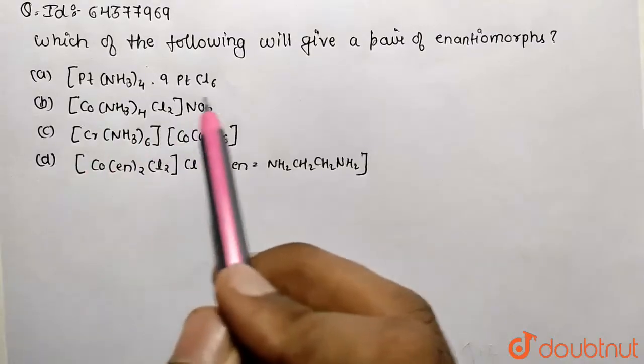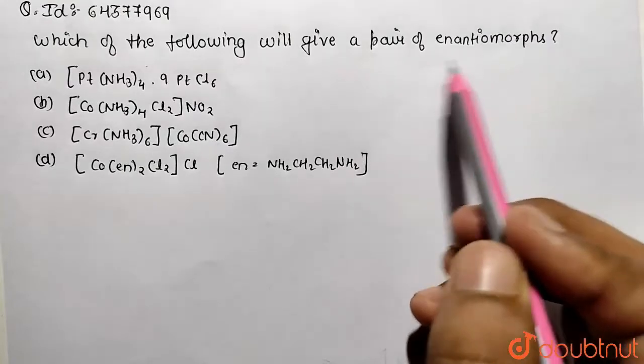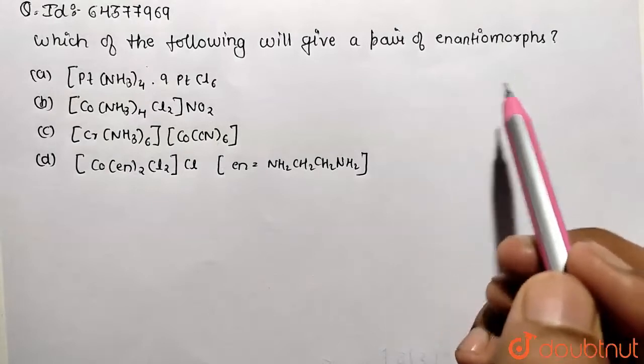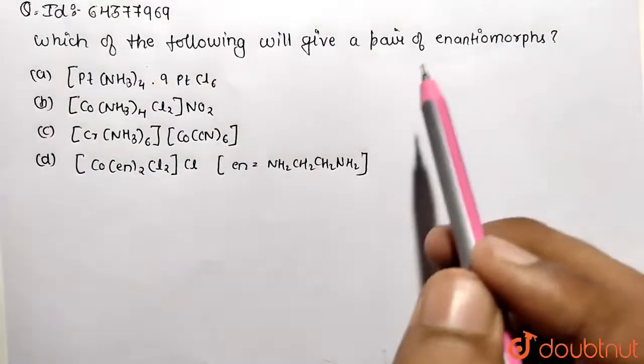we need to work on which of the following will give a pair of enantiomers. So what is this enantiomer? They are the optical isomers which is of the form D form and L form. So obviously they are representing the optical isomers.